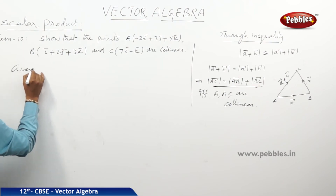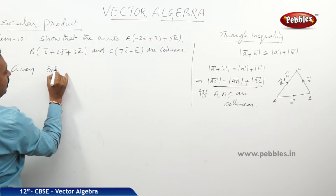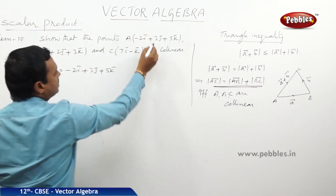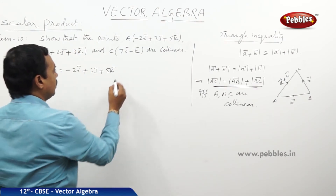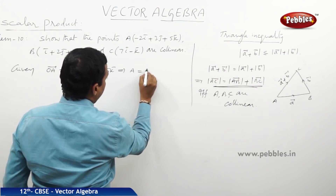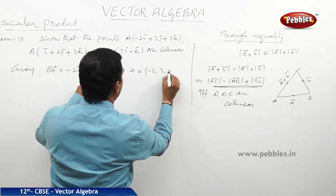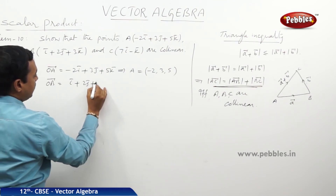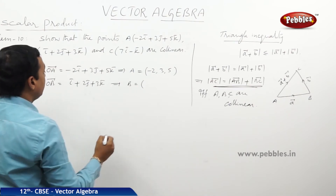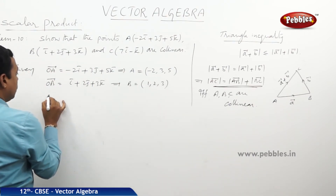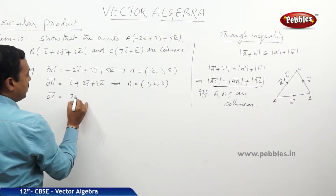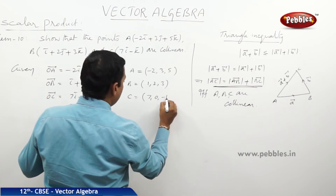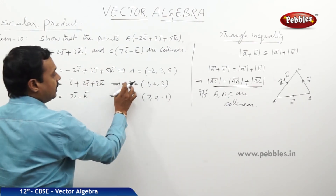Given: the position vector of A is OA = −2i+3j+5k, so point A is (−2, 3, 5). The position vector of B is OB = i+2j+3k, so point B is (1, 2, 3). The position vector of C is OC = 7i−k, which gives point C as (7, 0, −1). Now let us find the distances AB, BC, and AC.